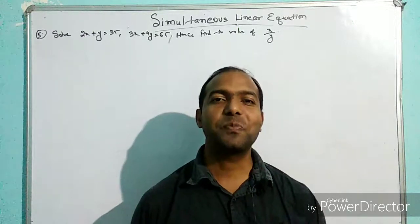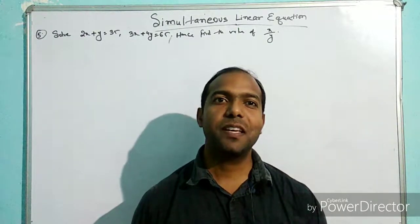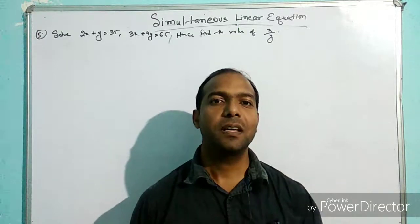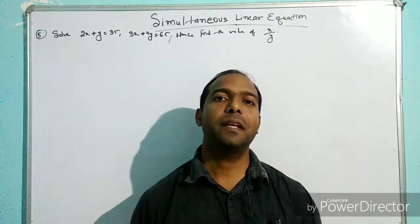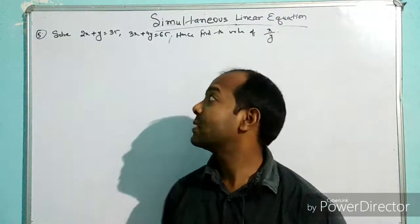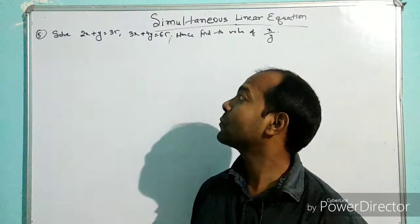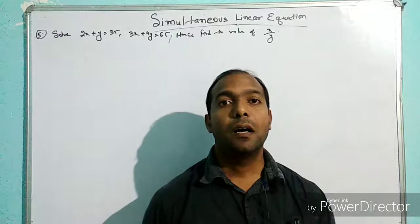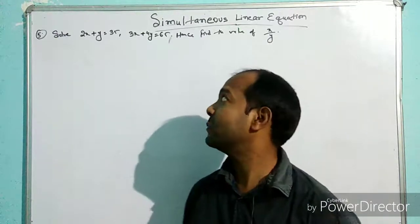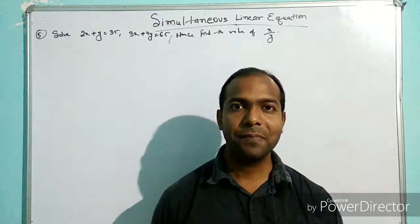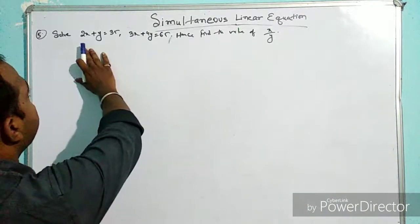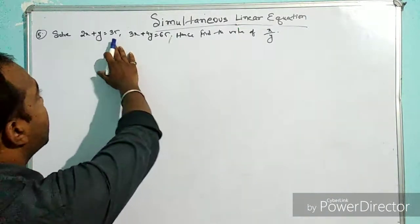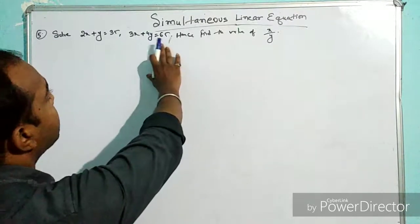Hello students, my name is Bhaskar and we are studying simultaneous linear equations. The book I have taken is Emela Karwal, chapter 5.1. This is our sum from exercise 5.1, question number 5. The problem is: solve 2x + y = 35, 3x + 4y = 65, hence find the value of x and y.